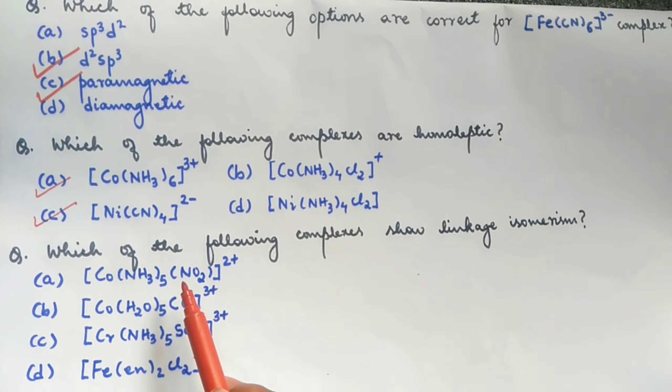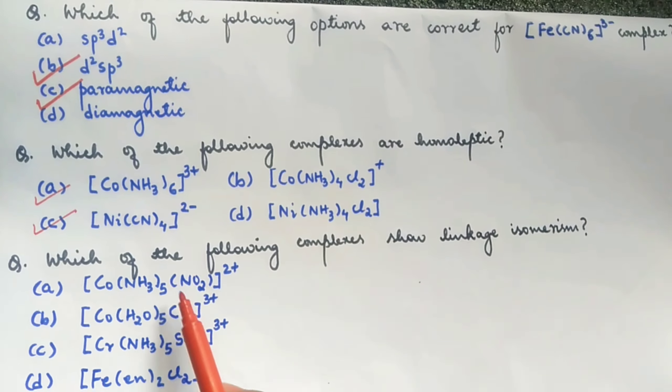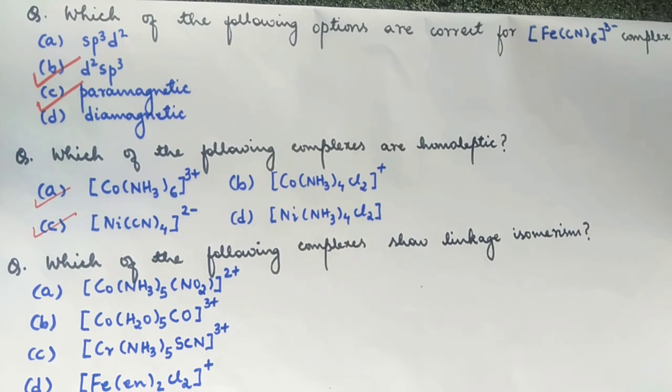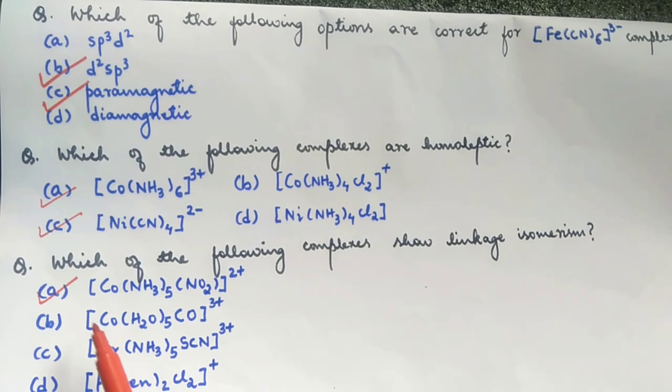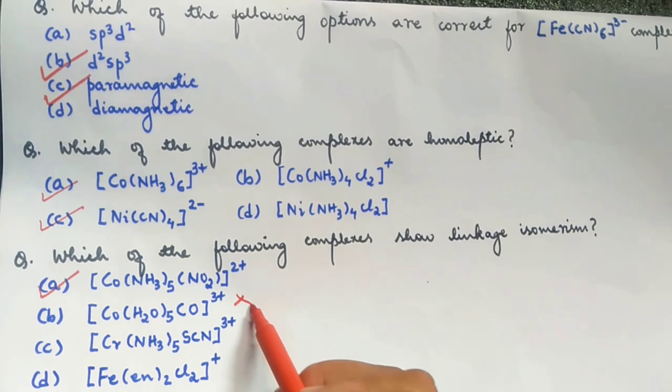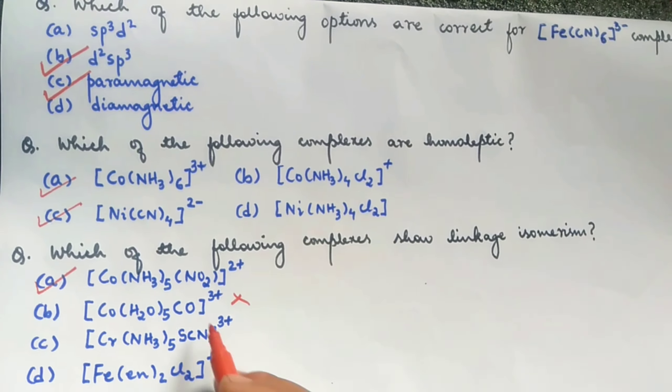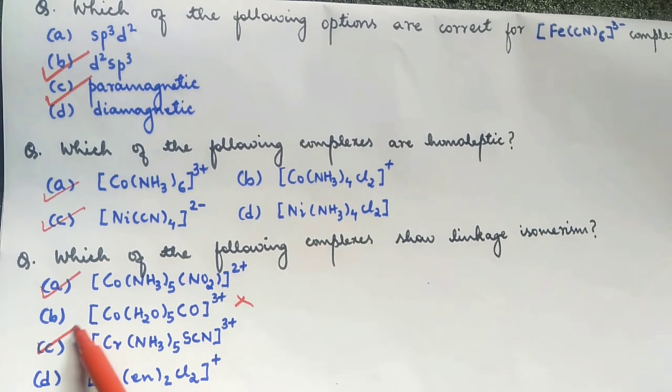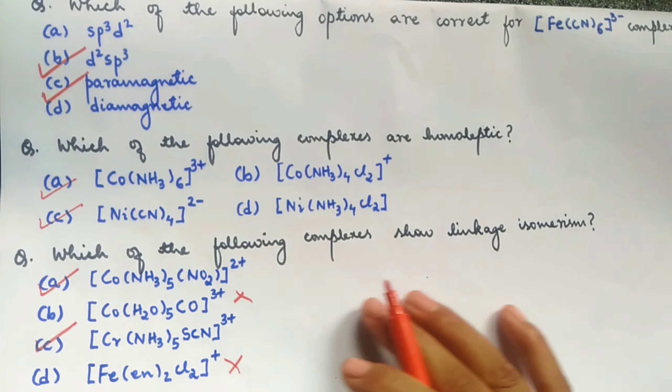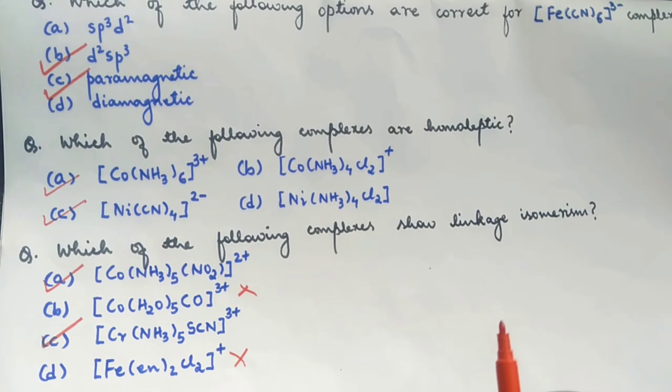Now, look at the first complex. Here, we have an ambidentate ligand. Because this ligand has two donor atoms. Either nitrogen can act as a donor or oxygen. Here, the correct option is A. And B, we don't have any ambidentate. So, it is out. In C also, we have an ambidentate ligand. So, C is the correct option. D, it is not because there are no ambidentate ligands. So, A and C are the correct options for this particular question. Clear. See ya.